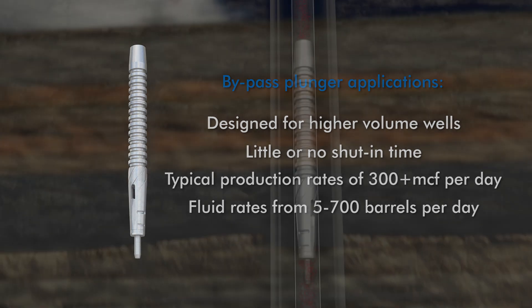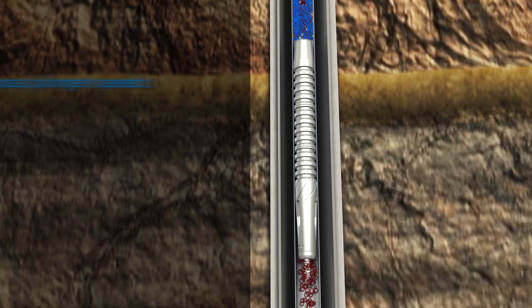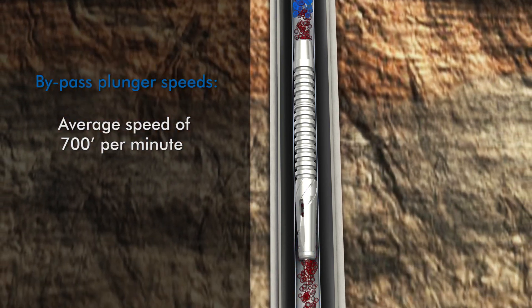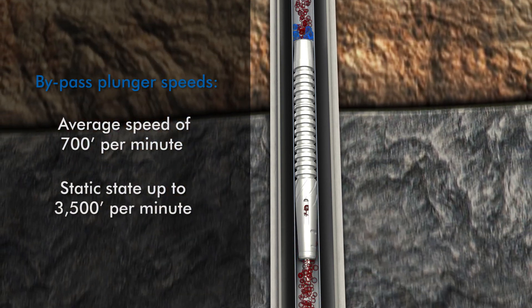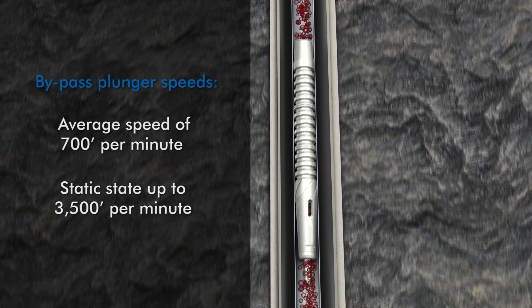The bypass plunger can fall against flow at an average speed of 700 feet per minute or as fast as 3,500 feet per minute in a static state.